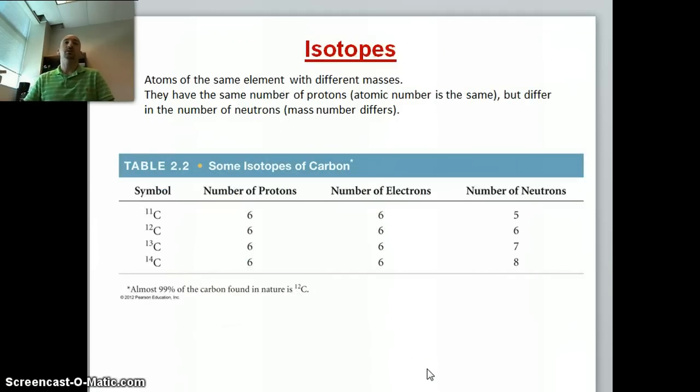We said that the number of neutrons in an atom can vary. If the number of neutrons does vary, then the mass number will vary. These are called isotopes. In this table, we can see several different isotopes of carbon. We have carbon 11, carbon 12, carbon 13, and carbon 14. The number of protons and the number of electrons are constant, but the number of neutrons changes, which is going to change our mass number.